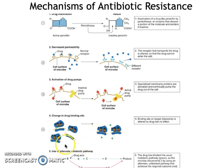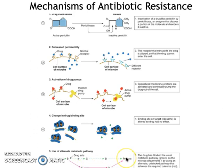The last method of antibiotic resistance is using an alternative metabolic pathway. If a drug acts on a certain enzyme in a metabolic pathway to create a product like DNA, the cell can acquire genes that allow it to make the same product but using different enzymes. So even if the drug is inside the cell and still acting on that enzyme, the cell can continue to make the important product and survive even with the antibiotic present.